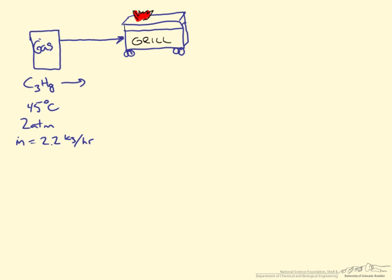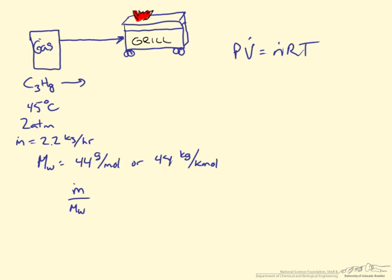What we want to know is the volumetric flow rate. Now the first place to start is to determine the molar flow rate so that we have all the variables necessary for our ideal gas law. In this case the molecular weight of propane is 44 g per mole, or 44 kg per kmol. Since we're working with kg per hour we can go ahead and convert that to kg per kmol. Taking the mass flow rate and dividing by the molecular weight gives us 0.05 kmol per hour.